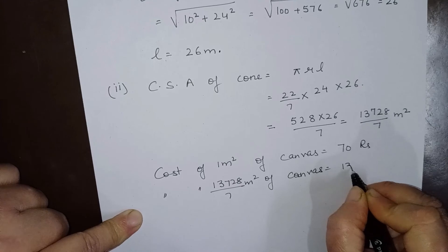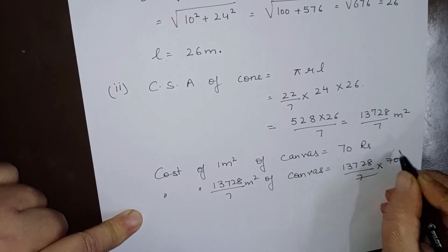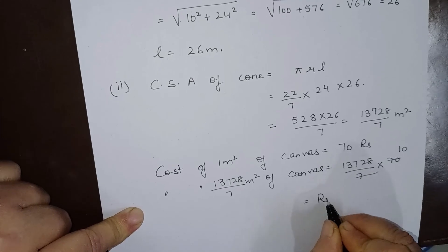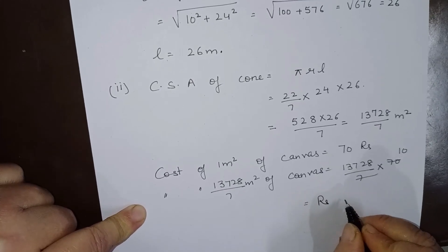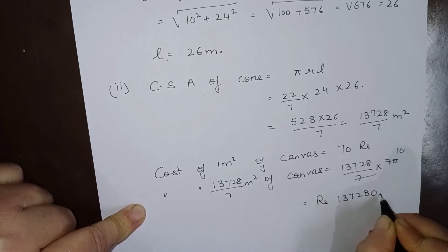will be 13728 over 7 into 70. So the total cost will be 137280 rupees.